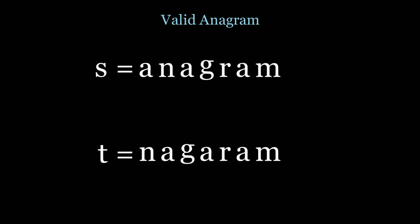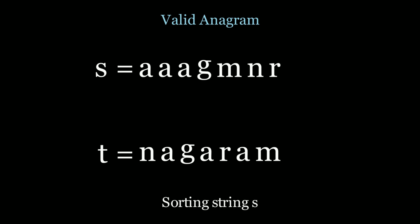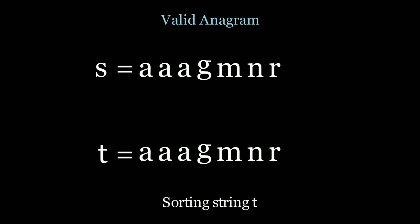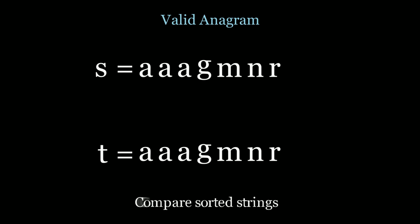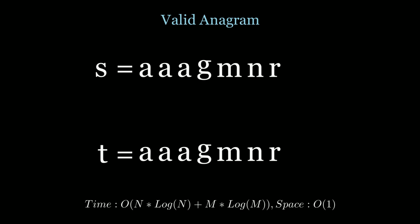In the brute force case, what we could do is sort each of the strings and then compare the sorted order. If we sort s we get 'a a a g m n r', and if we sort t we should have the same exact string if they're anagrams. We compare the sorted strings — they're equal, and that means we have anagrams. The time complexity is O(n log n + m log m) where n is the length of s and m is the length of t, and the space complexity is constant since we're just sorting and comparing.